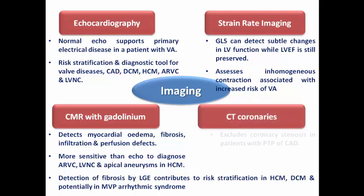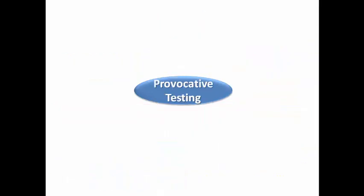CT coronaries can help exclude coronary stenosis in patients with intermediate to high pretest probability of coronary artery disease, and can diagnose or exclude coronary anomalies responsible for ventricular arrhythmia. Provocative testing is ordered when we have a suspicion or specific provisional diagnosis — we do not order it routinely.